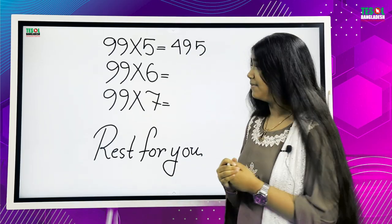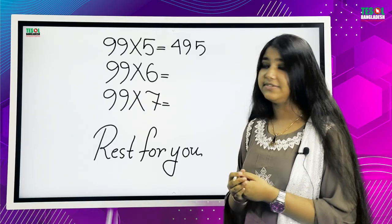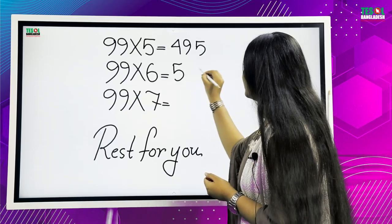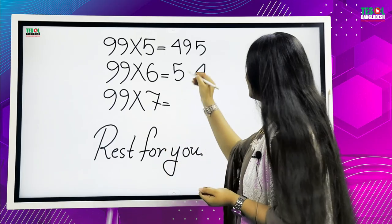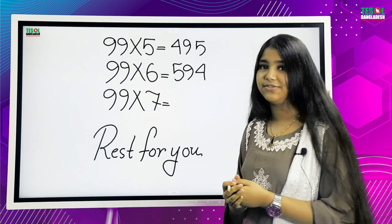99 times 6 equals: 9 times 6 equals 54. So, we write 54, but we keep a gap in the middle. And we put the second 9 in the middle. 594.